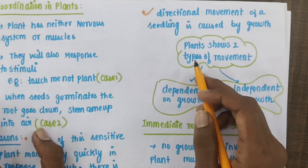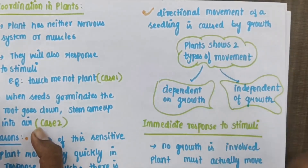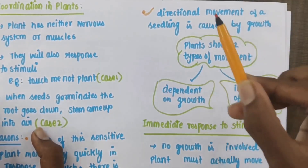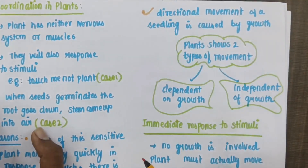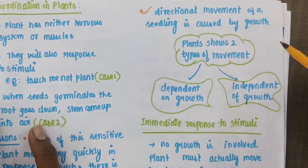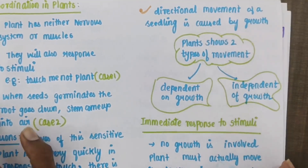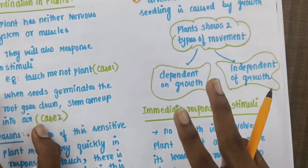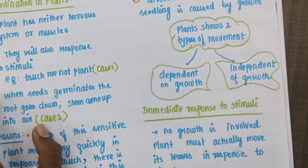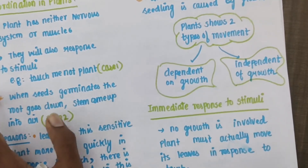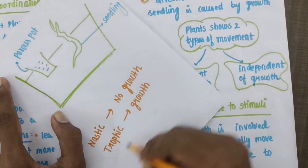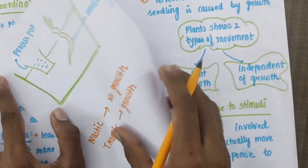The directional movement of the seedling is caused by growth — so there is directional movement. The root grows in the correct direction and the stem grows upward. The directional movement is a growth-based movement. There are two types of movement: tropic movement depends on growth, and nastic movement does not depend on growth.